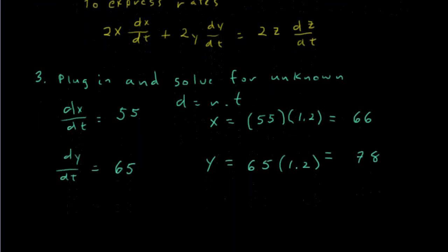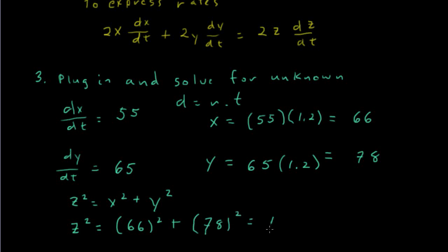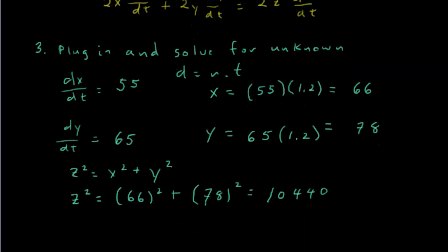It looks like we know everything except for the distance between the two cars after 1.2 hours. But here comes the Pythagorean theorem again. We have z squared equals x squared plus y squared. We know what x and y is, and so we'll just plug in to find out what the distance between the two cars is z. So we'll have 66 squared plus 78 squared. And by the way,